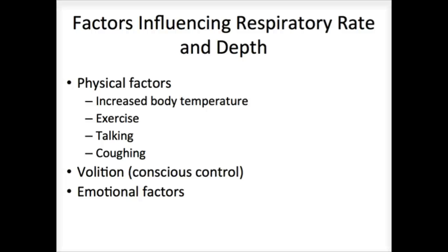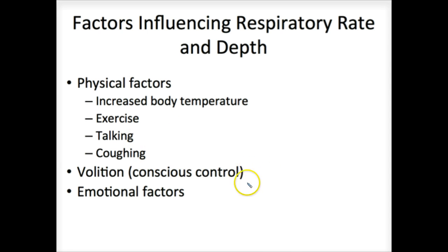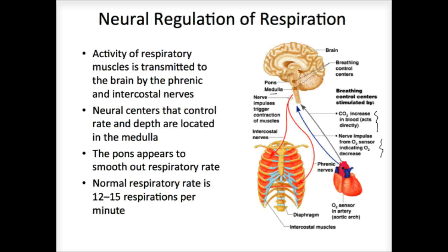We have neural control, and then we have physical factors such as changes in body temperature as we exercise, talking, coughing, and consciously changing the amount of air we inhale or exhale. Then there are emotional factors — that whole thing that happens when you panic and tend to hyperventilate, etc. All of this is monitored and controlled by our nervous system.